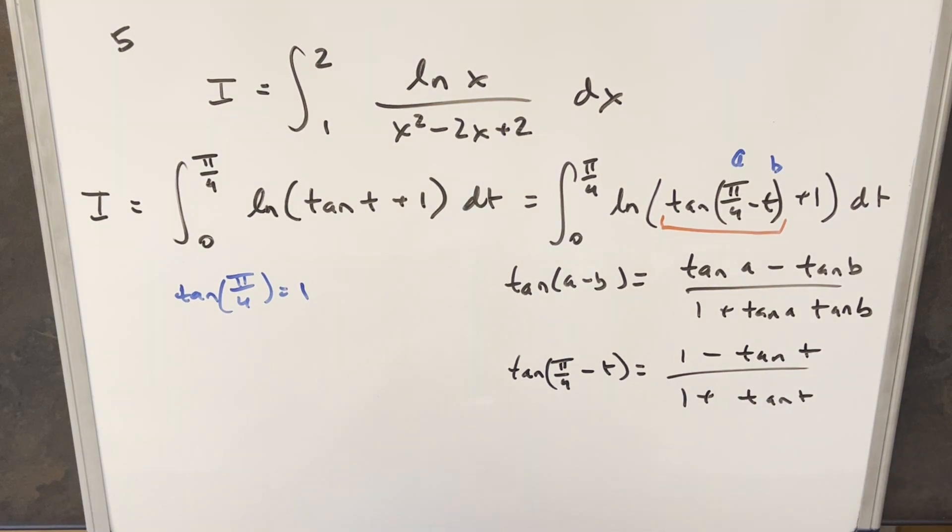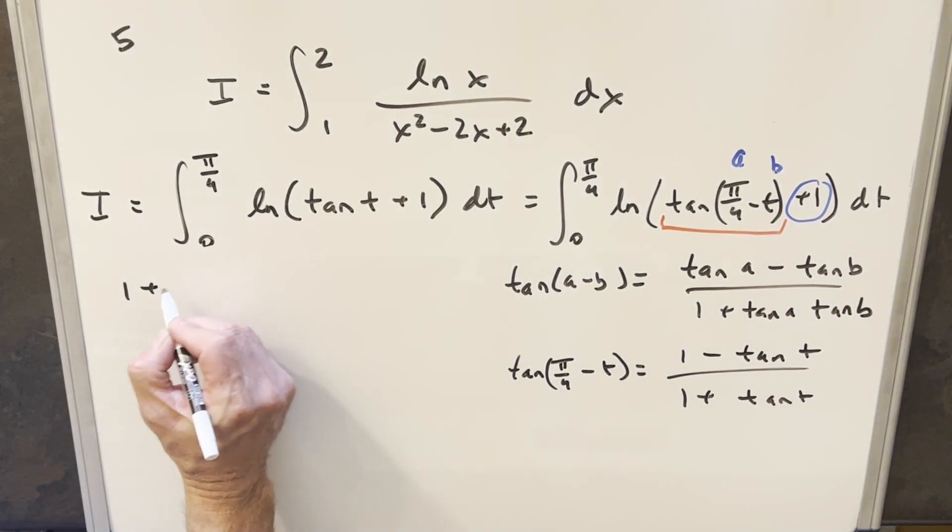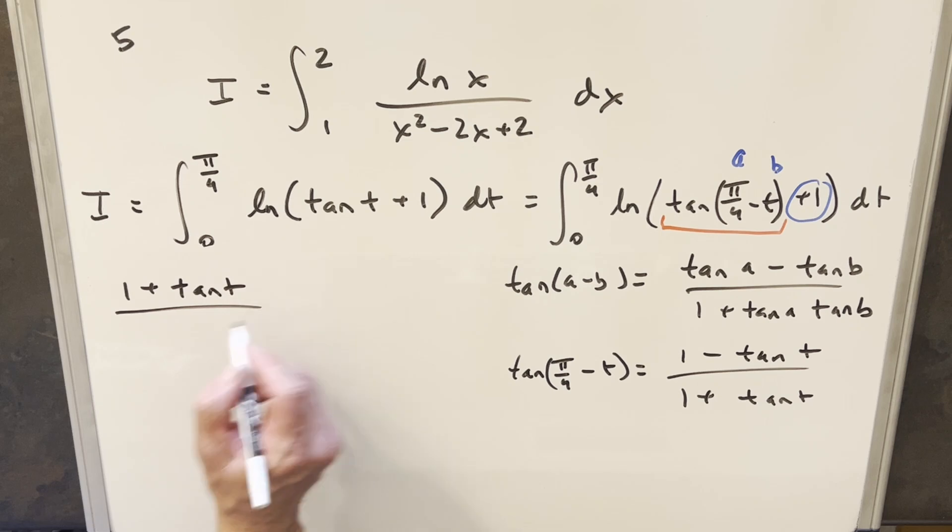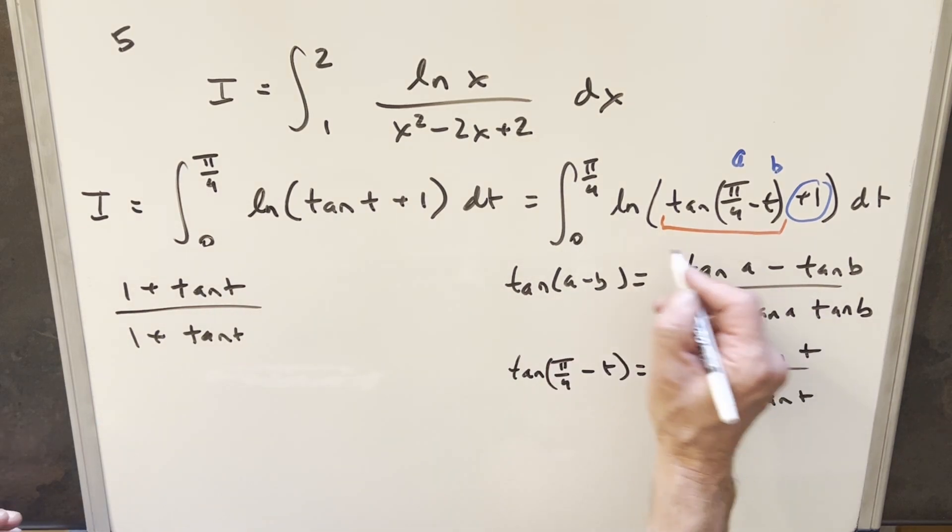But then what I want to do next is just remember we have this plus 1 here. It's kind of awkward still having stuff added inside the natural log. So what I want to do is add that to this, and what we can do for that is create a common denominator. So for the 1, I can write 1 as 1 plus tan t over 1 plus tan t.